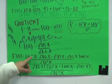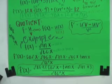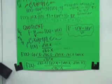And then you just solve. And your final answer would be f prime x equals secant x times cosine x plus tangent x times sine x, all over secant squared x.